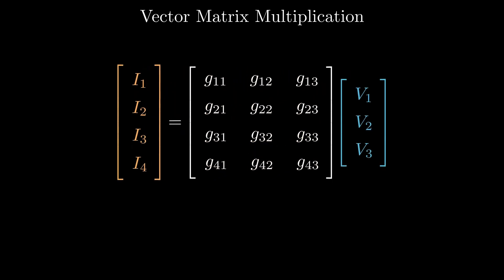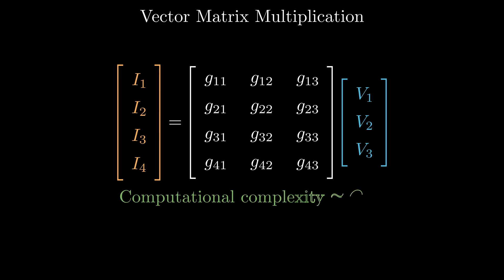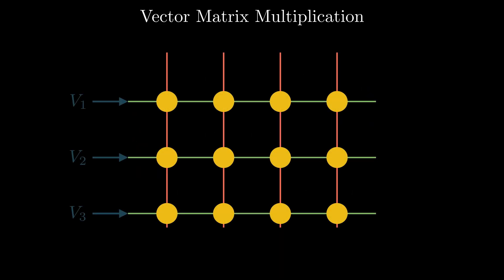So we have just completed an entire vector-matrix multiplication in a single computation step using far less energy. Every cell works at the same time. No loops, no data movement to load weights, no memory bottleneck, just pure parallel computing right inside the memory.